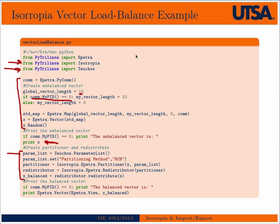The first line instantiates the parameter list, and the second line sets the load balancing scheme — this time we're going to use RCB. Then here are the Isoropia commands: we create a partitioner which takes in the vector X and the parameter list we just created. Then we create a redistributor from that partitioner, and with that redistributor we redistribute X, storing the result in X_balanced.